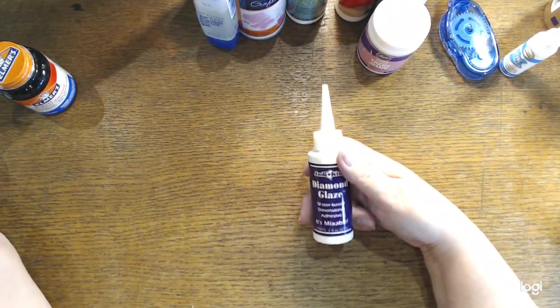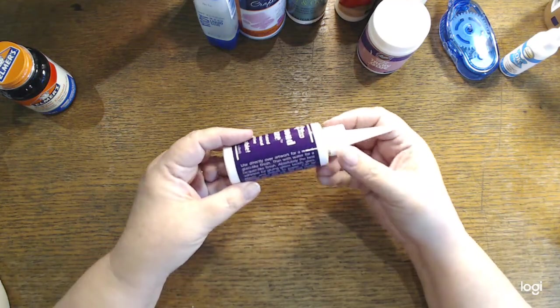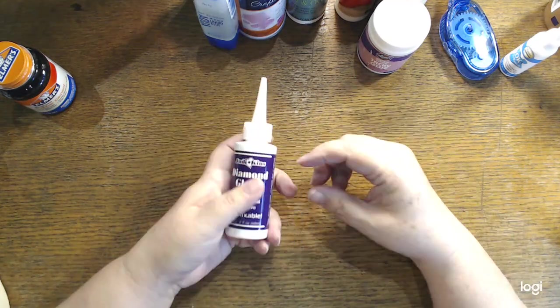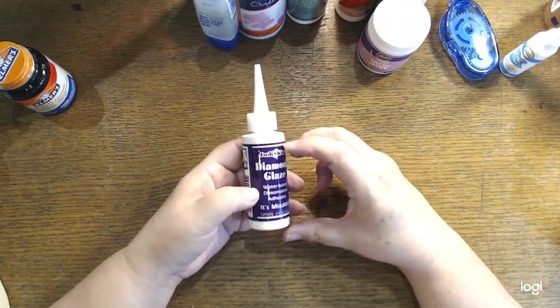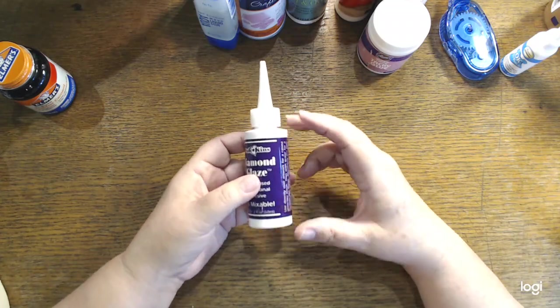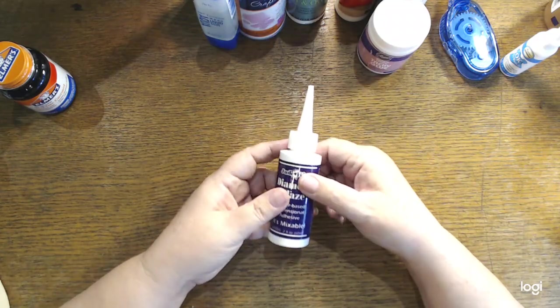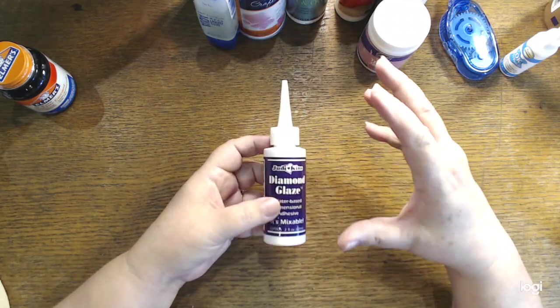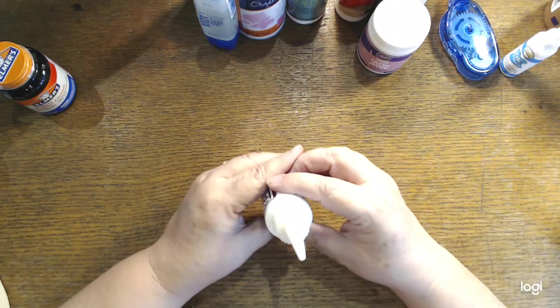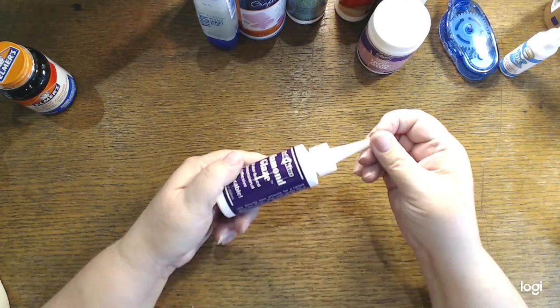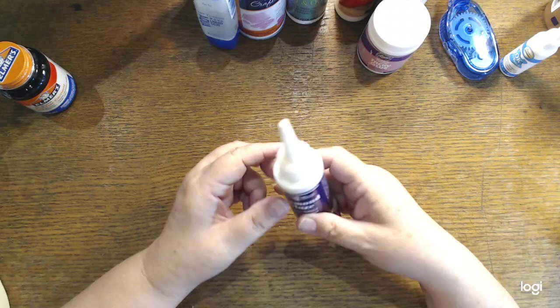Diamond glaze, you can do a lot of things with it. It's sort of like glossy accents I think, which I also have around here somewhere, but I couldn't find. And it gives you that kind of a glass-like shine over something, kind of almost like a resin-like look. Again, have not even opened this one yet, though I bought it for a project I thought I was going to do, didn't do.